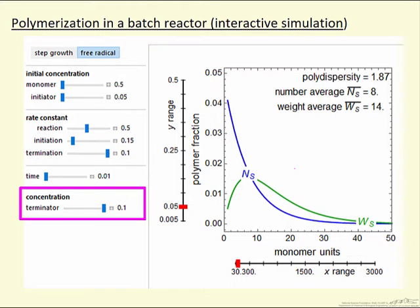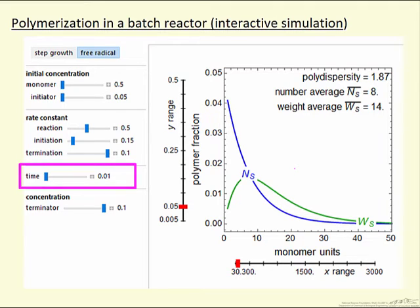The concentration of the terminator can also be changed. We can look at the polymer fraction versus the number of monomer units in that polymer, as we change the time with this slider. The two fractions are: the number fraction, the blue curve, which corresponds to how many polymer units with that particular number of monomer units divided by the total number of polymer units. In contrast, the weight fraction, the green line, corresponds to the weight of polymers with, for example, 10 monomer units divided by the total weight of polymers.